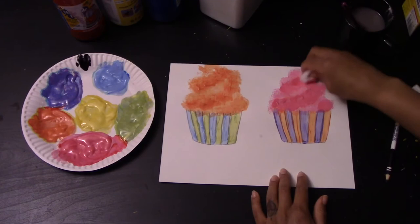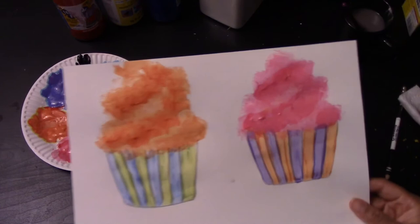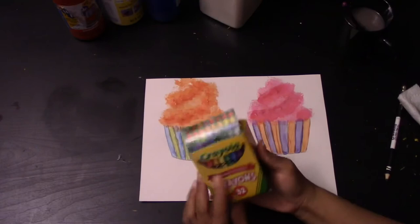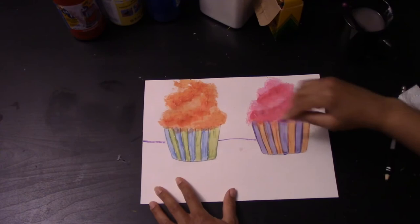And there you have it. Next, we're going to work on the table and the background. Pick a color and you're going to draw a line across the paper behind your cupcakes.